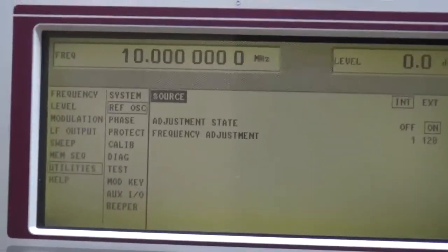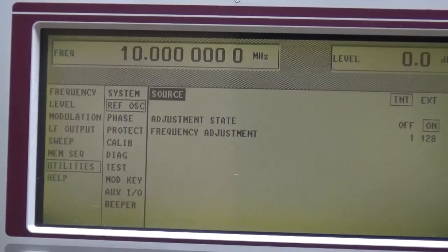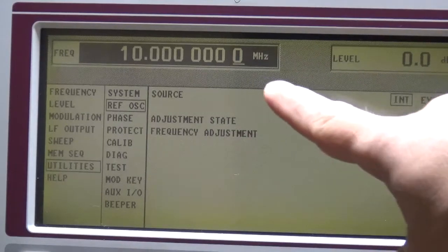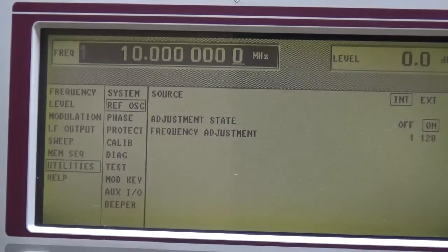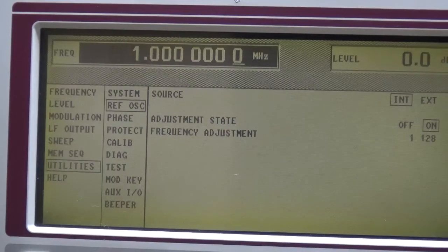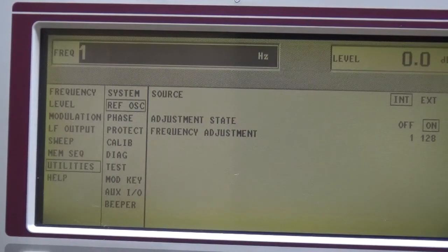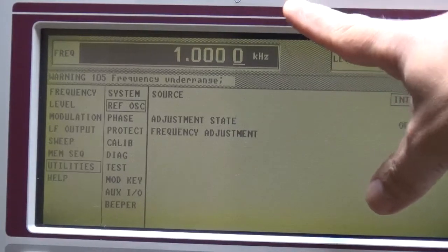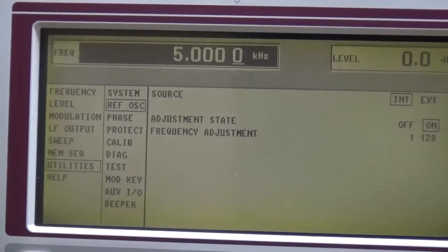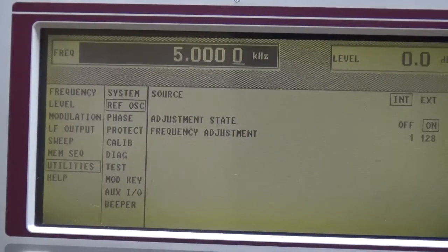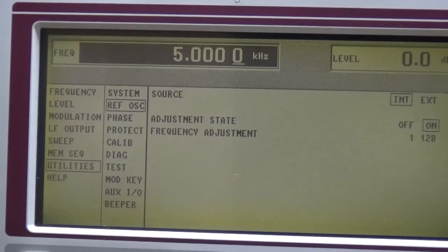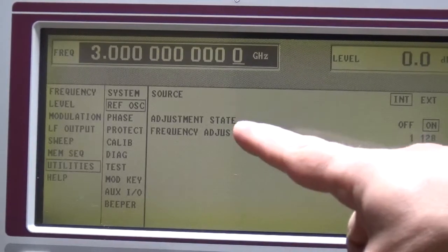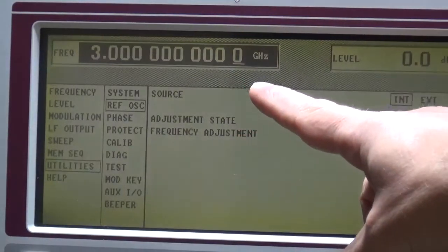First of all, the most important function of the generator is of course frequency. You can set for example one megahertz or one kilohertz. Now keep in mind the minimum signal is five kilohertz up to a max of three gigahertz, which is pretty high frequency.